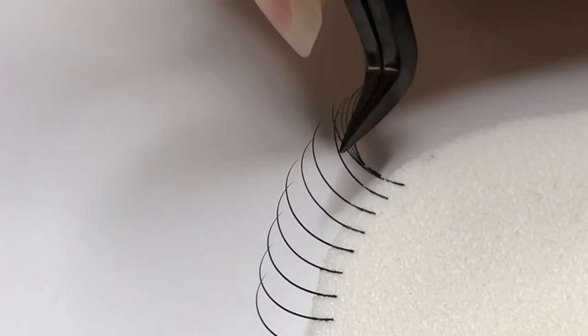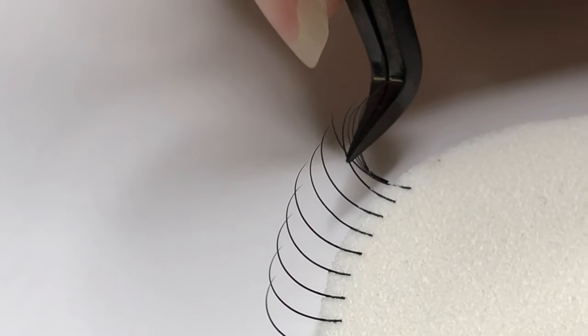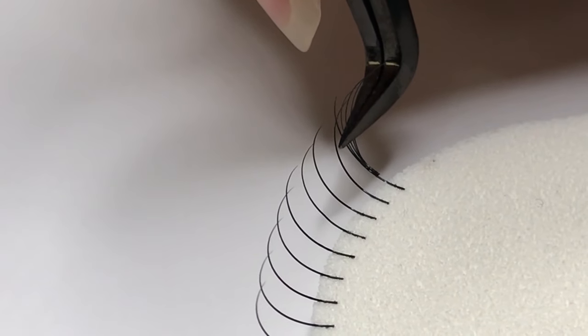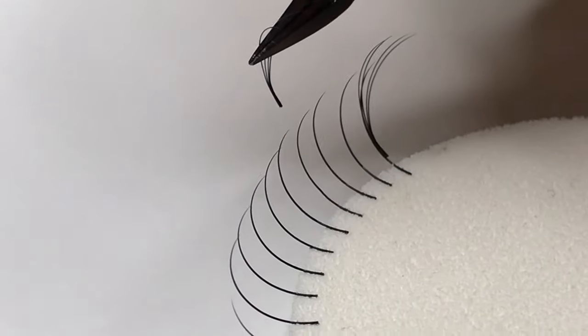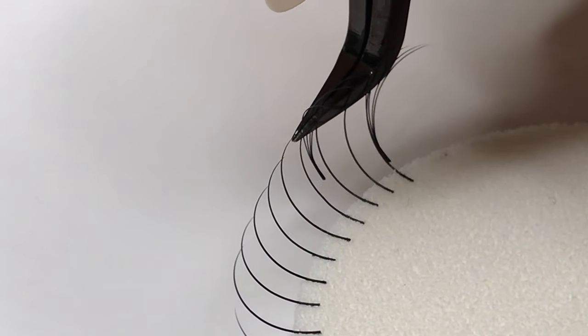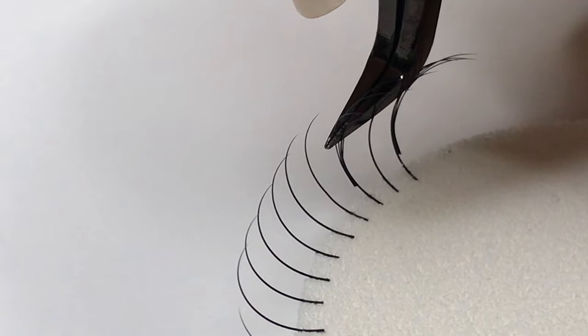I like to use slight pressure to push down to the natural lash which helps the volume fan attach more securely. Bottom placements are good to use for lifting the downward pointing lashes.